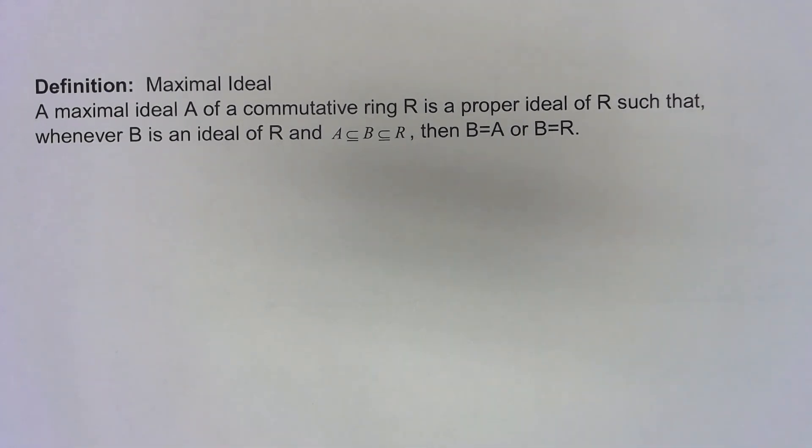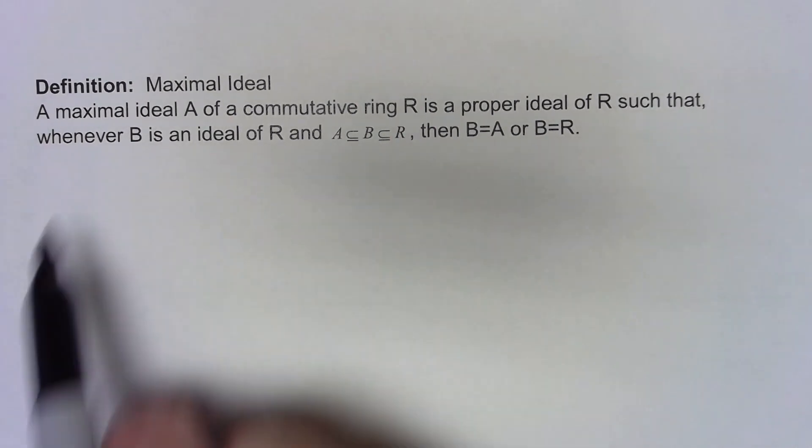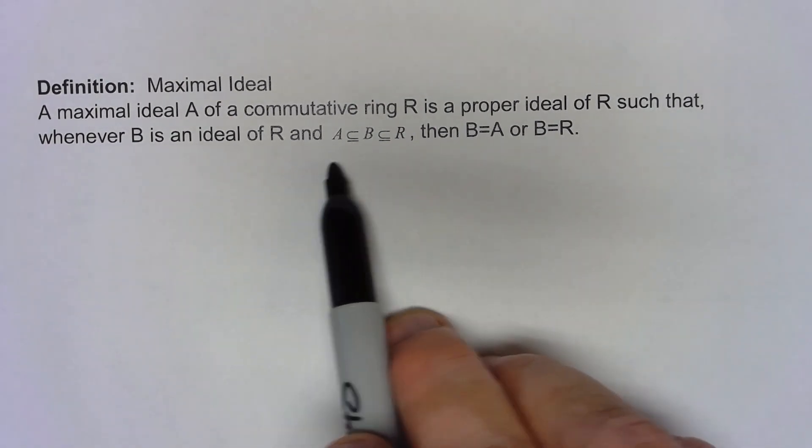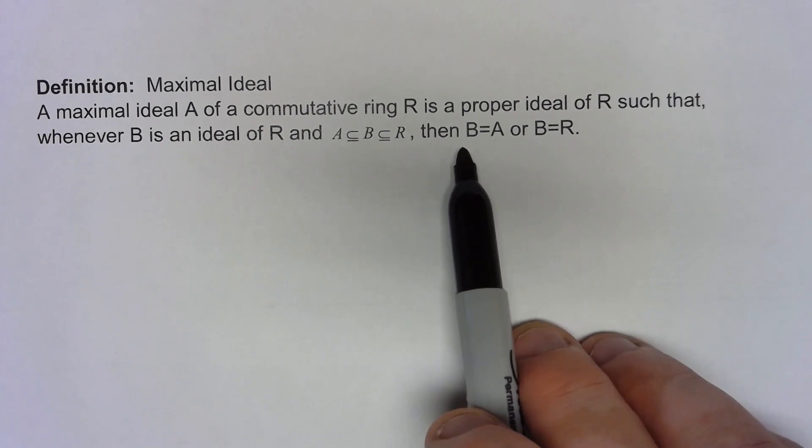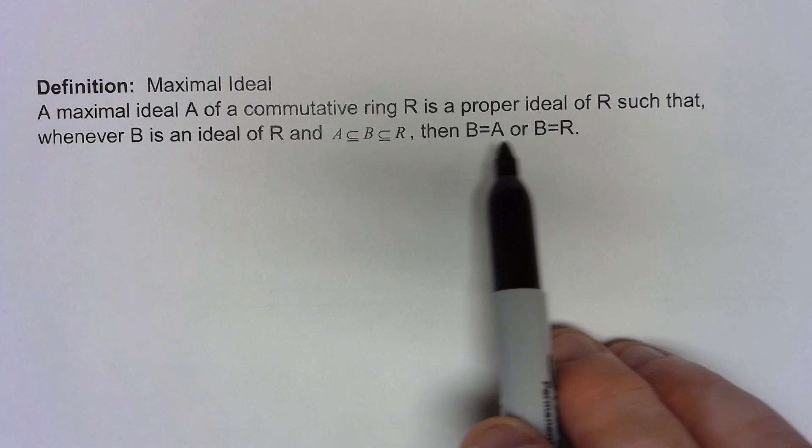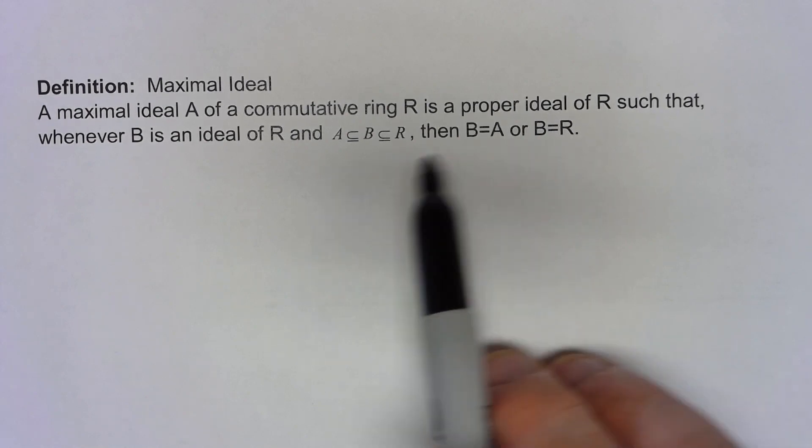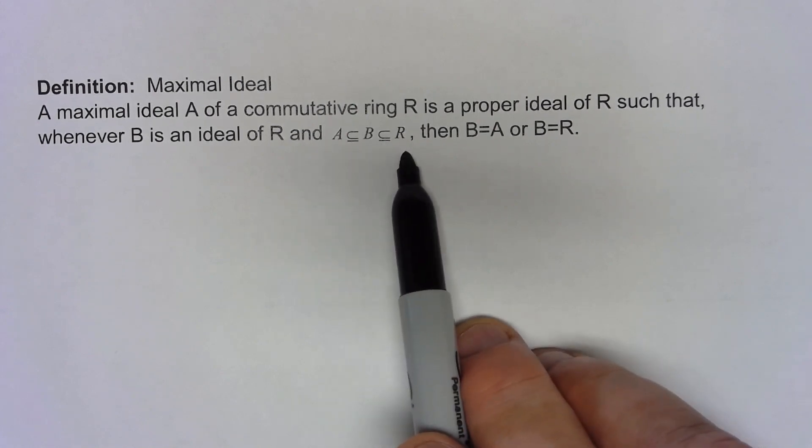Another ideal is a maximal ideal. A maximal ideal, again, only working with commutative rings, again has to be a proper ideal, can't be all of the ring. The whole idea is that if you've got an ideal that contains that maximal ideal, the only possibility is either the ideal that contains it is just the ideal itself or it's the whole ring. There's nothing that is between the ideal and the ring.